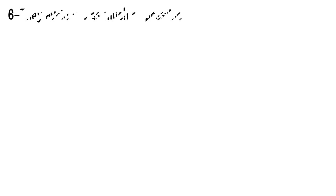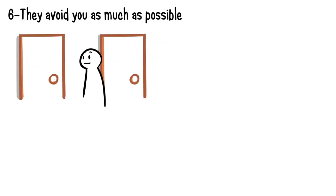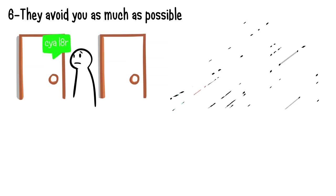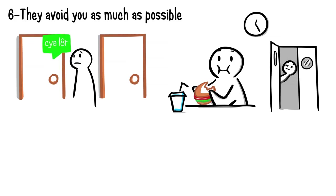Number six: They avoid you as much as possible. Do they live or work in close proximity to you, but limit communication to emails or text messages? When someone secretly dislikes you, they will do whatever it takes to have minimum contact with you.